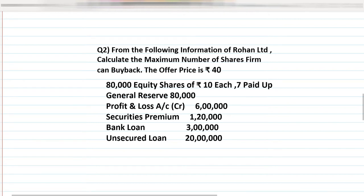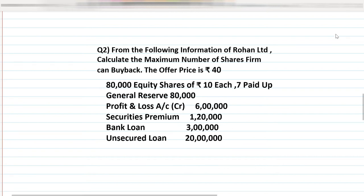In the previous lecture I covered how to prepare the working notes for buyback and how to calculate the important points. The same applies here, with one extra point: what to do with partly paid up shares. The offer price given in the question is 40. We have various sources: general reserve, profit and loss, and securities premium.